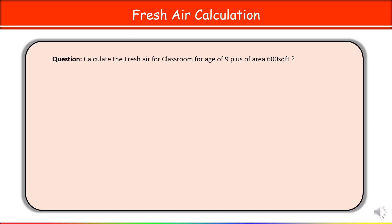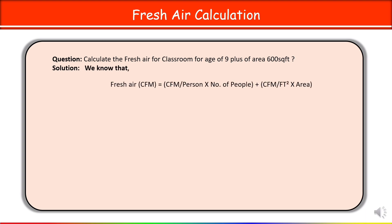Let's look at one example. In this problem, we need to calculate the fresh air requirement for a classroom for age 9-plus, with an area of 600 square feet. We have one classroom where 9-plus age students are inside, and the total area of that classroom is 600 square feet.